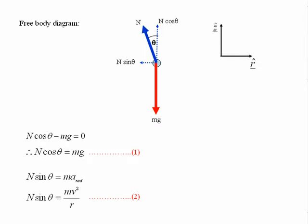In the horizontal or radial direction, the resultant force equals N sin theta, which must equal the centripetal force. So the equation of motion is N sin theta equals M times the radial acceleration. Substituting for the radial acceleration in terms of v squared over R, the speed of the car squared divided by the radius of the bend, we get N sin theta equals M v squared over R.